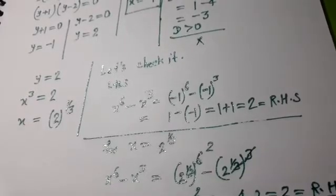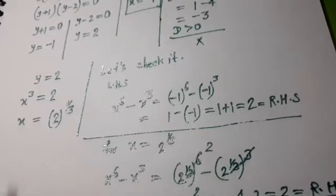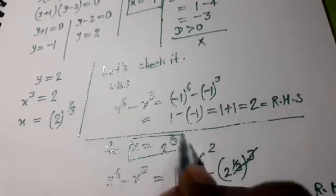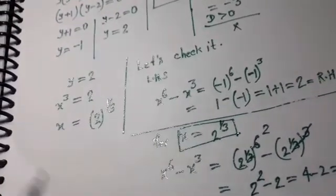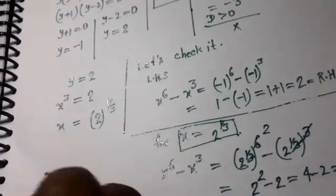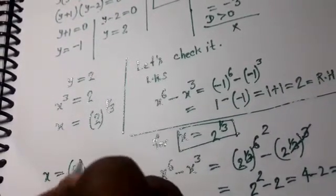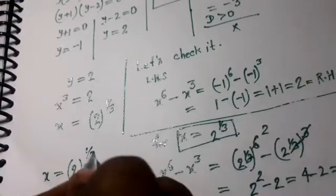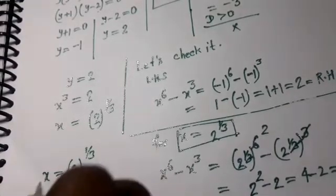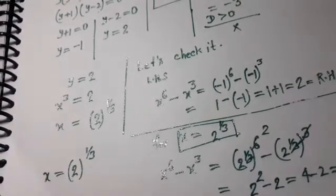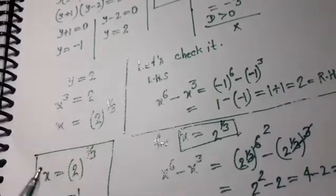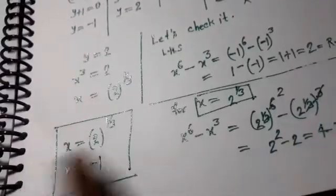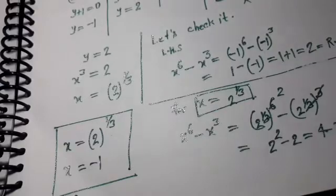Finally, we have two results: x equal to 2 to the power 1 upon 3, and x equal to minus 1. Thank you.